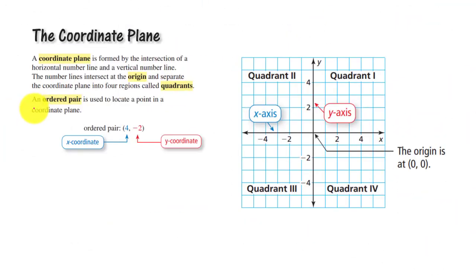Now let us see how coordinate plane is formed. A coordinate plane is formed by intersection of a horizontal number line and a vertical number line. The number lines intersect at origin and separate the coordinate plane into four regions called quadrants.